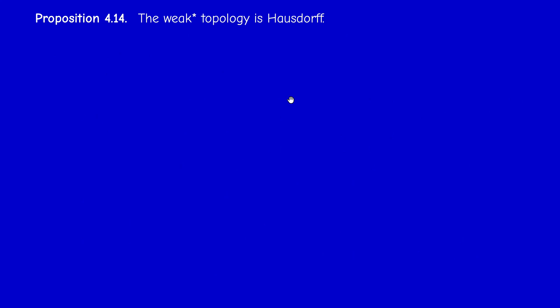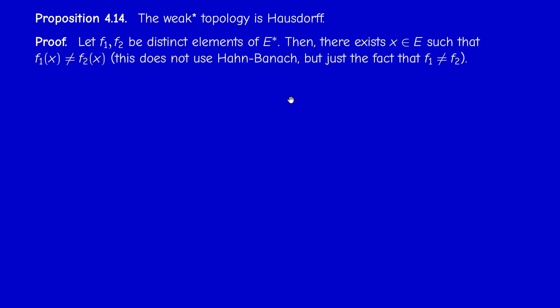The weak-star topology is also Hausdorff, and this is a consequence of the definitions, not of the Hahn–Banach theorem. To prove a topology is Hausdorff, I take two arbitrary distinct points in the space. Since f₁ ≠ f₂ are functions with the same domain and target, they differ at at least one point x.